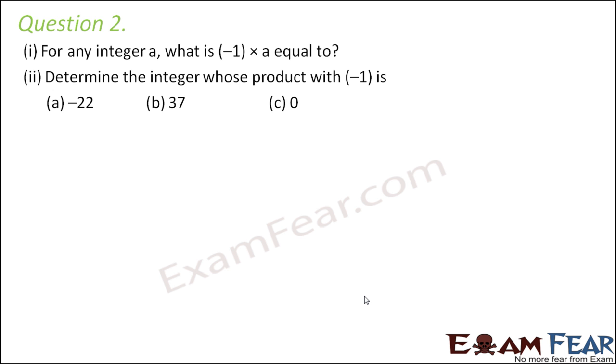Question number 2. For any integer a, what is -1 × a equal to? So now what do we know? We know that 1 is multiplicative identity. So if you have any integer a, multiply it with 1, it gives you a.